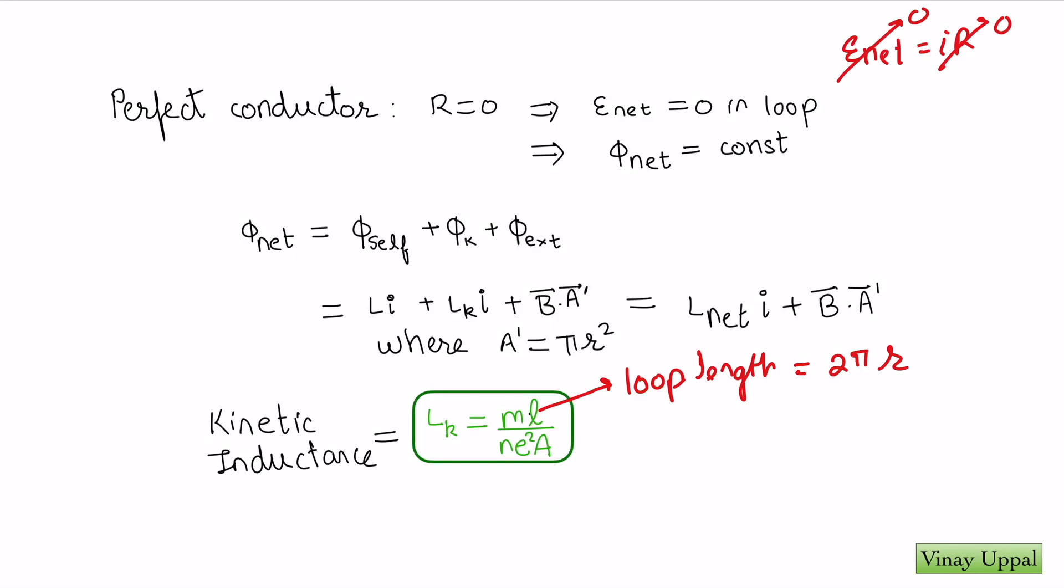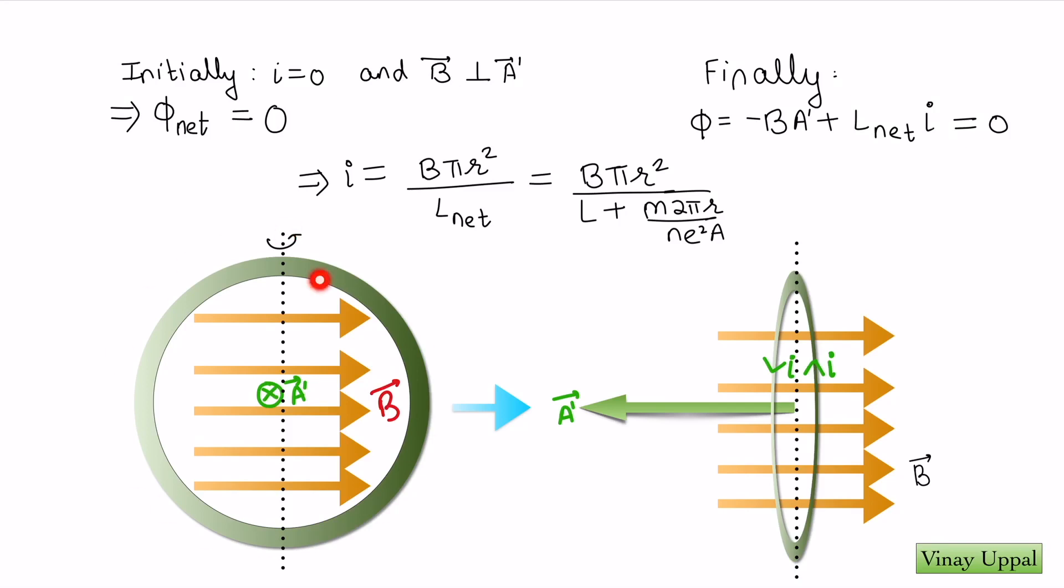What we are going to do is set the condition that the net flux has to be a constant in a perfect conductor. So I am going to write the initial flux, write the final flux, and equate it by including the kinetic inductance as well. This is the initial setup. These are the magnetic field lines and area vector I have chosen to be inwards for the loop. You can see that the initial external flux will be 0 because the angle between the magnetic field and the area vector is 90 degrees, so dot product will be 0. Initially, current is also 0, and therefore the entire net flux will be 0 because current is 0. The self flux and the kinetic inductance flux will be 0, and the external flux is anyway 0. So the entire total flux is 0, and therefore the total flux always has to be 0 no matter how you rotate the ring.